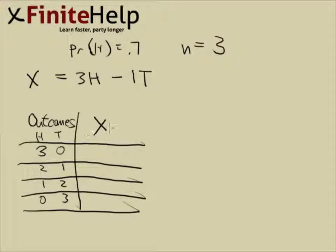And now we want to look at the X values. If you have 3 heads, simply treat this like an algebra substitution. So 3 times 3 minus 1 times 0, which is going to be 9.